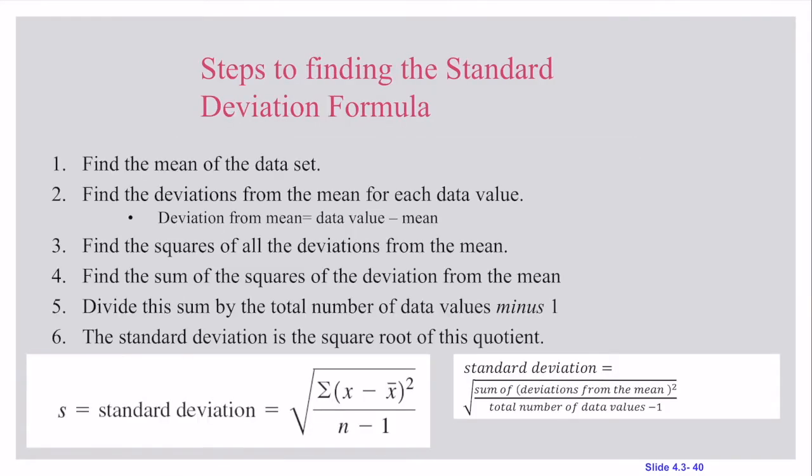So steps to finding the standard deviation. The first thing you need to do is find your mean, that's your x̄. Then you're going to find the deviations from the mean, that's taking each data value minus the mean. You're then squaring all the deviations from the mean to remove any negatives. You then take the sum, we divide the sum by the total number of data values n minus one, and take the square root of this quotient. So we're taking the square root of what's underneath our radical symbol.